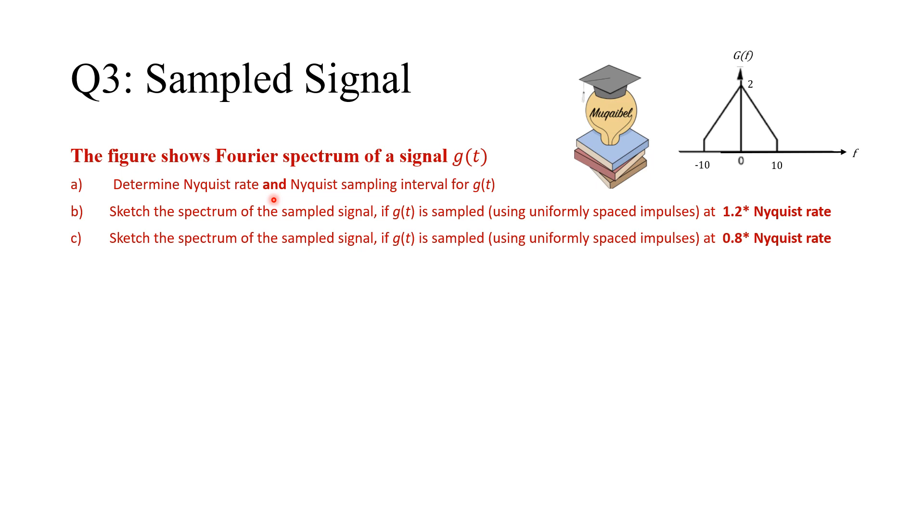Okay. Now, time to look at the answer. The answer is, the Nyquist rate is twice the highest frequency, 20. And the Nyquist interval is 1 over the Nyquist of the sampling frequency, which is 1 over 20.05 seconds. The second question.